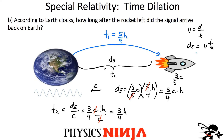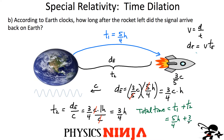So the total time is T₁ + T₂: the time when the signal was sent plus the travel time for the signal to reach Earth. That's 5/4 hours + 3/4 hours = 8/4 hours = 2 hours. So the total time as measured by Earth, from when the rocket left to when the signal arrived back, is 2 hours.